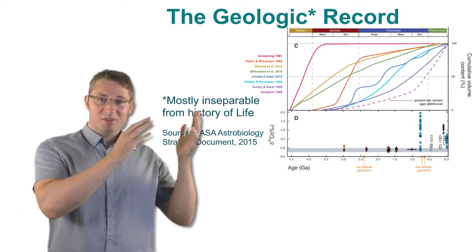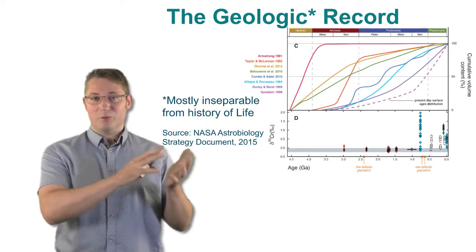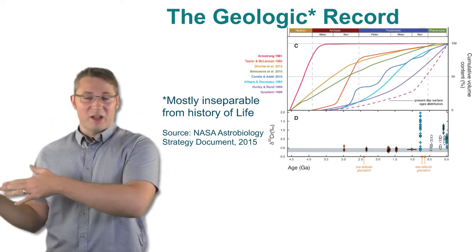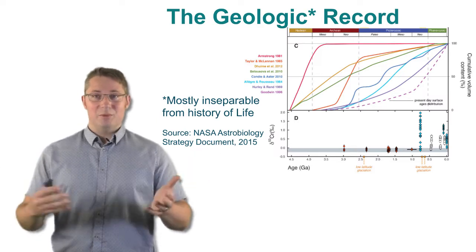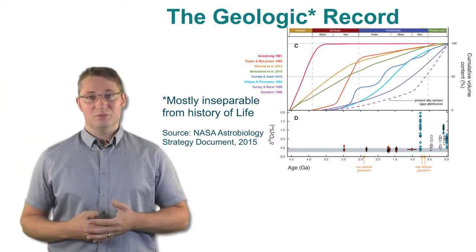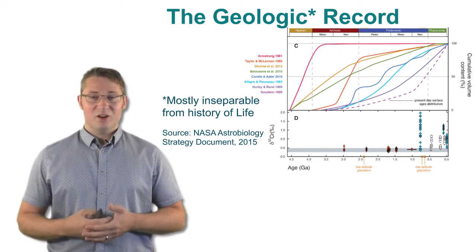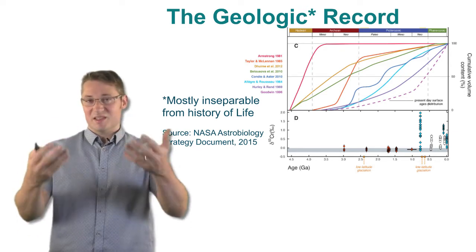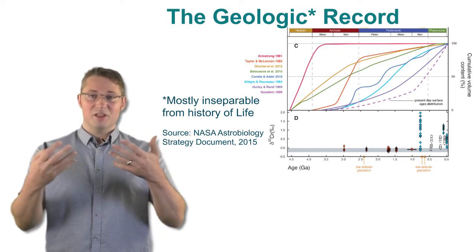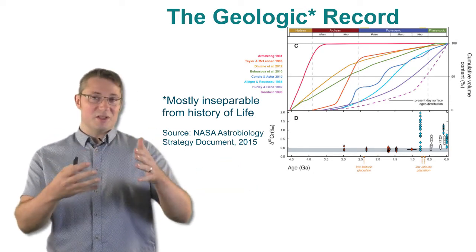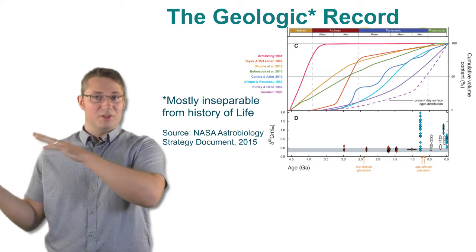So on the left, we have the very beginning of the planet, the formation of the planet 4.5 billion years ago. All the way to the right, we have today, and we have 100% crustal volume content. And all of the different colored lines in between are different ways that you can sensibly interpret those scraps of data to say how much continental crust has accumulated and been produced over time.